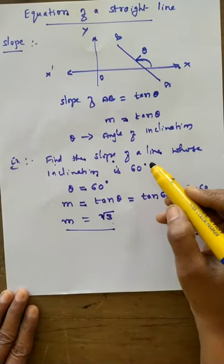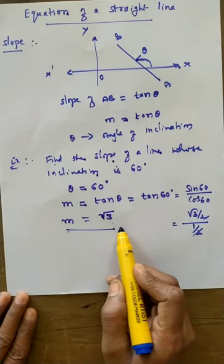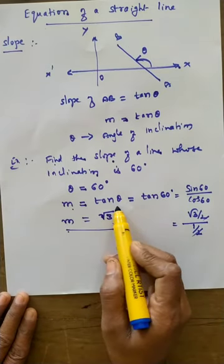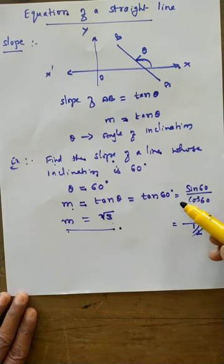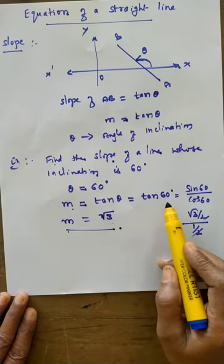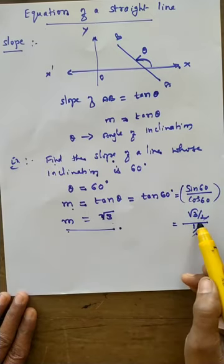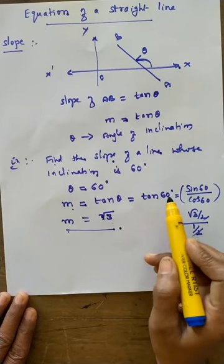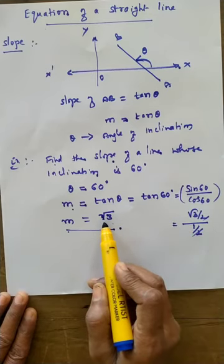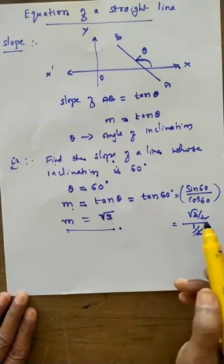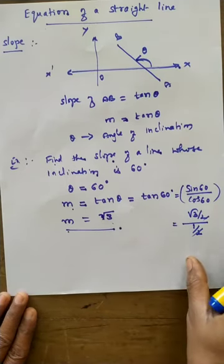This is how to find the slope when the angle of inclination is given. Use the formula M = tan θ. You need trigonometry knowledge — use the trigonometry table. Tan 60° from the trigonometry table gives √3 directly, so M = √3. Keep it as it is; that is the slope.